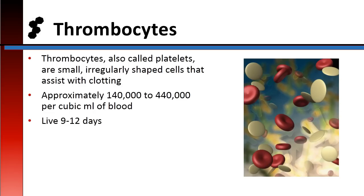The third type of blood cell is a thrombocyte. A thrombocyte, also called a platelet, is a small irregularly shaped cell that assists with clotting. There are approximately 140,000 to 440,000 per cubic milliliter of blood, and on average they live nine to twelve days.